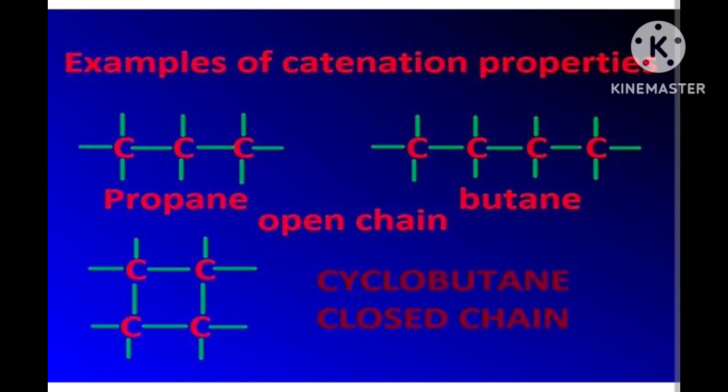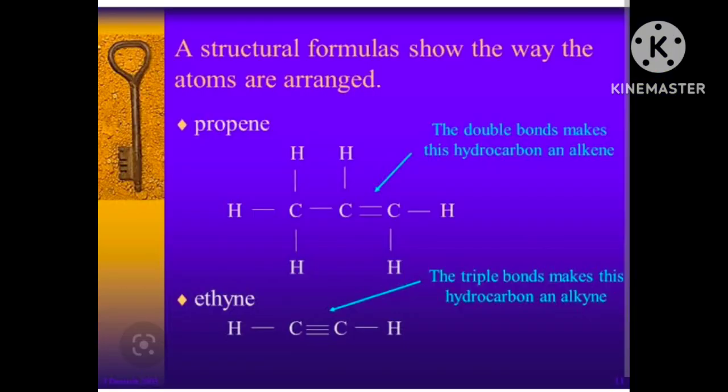I hope you understand what is actually catenation: the self-linking property of carbon atoms to form open chain compounds, branched chain compounds, or cyclic compounds. The components include single bonds, double bonds, and triple bonds.